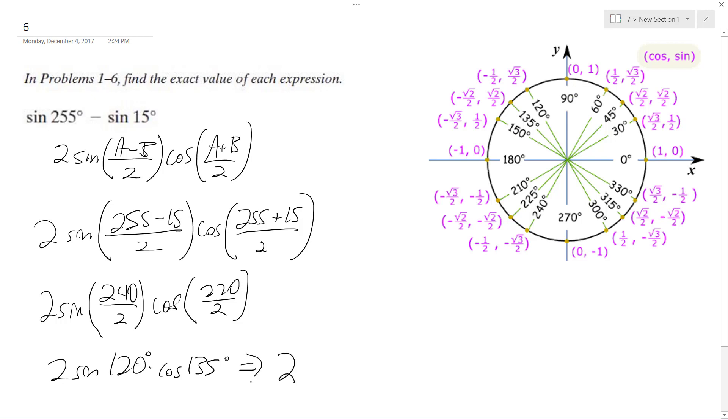And we end up with ultimately 2 times negative root 3 over 2. Actually, that's not negative root 3 over 2.